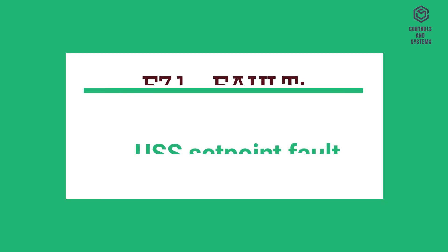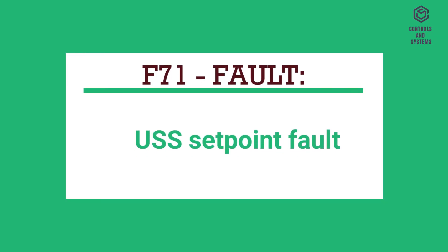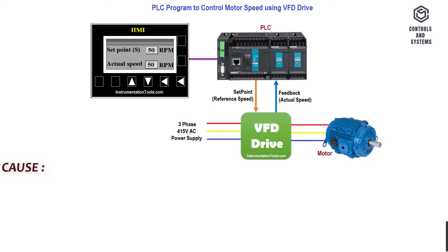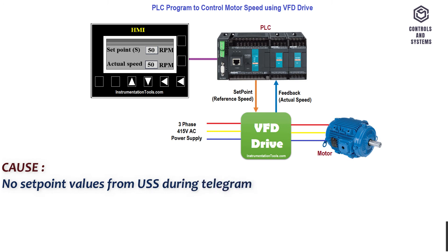F71 Fault: USS Setpoint Fault. Cause: No setpoint values from USS during telegram off time. Remedy: Check USS master.